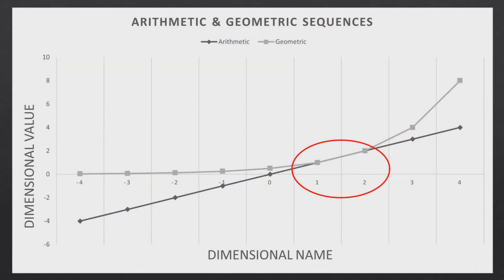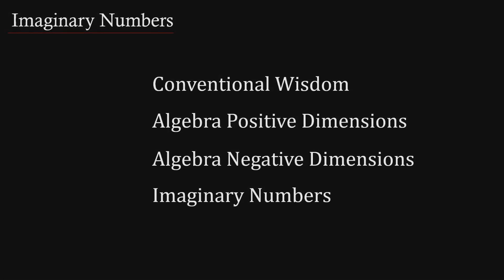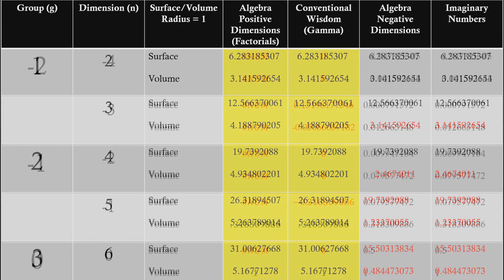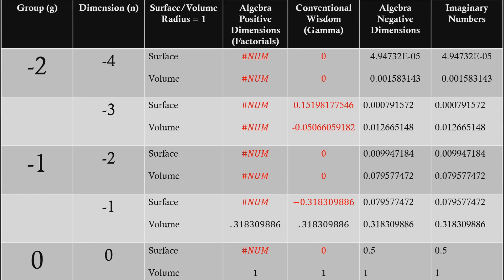In Episode 3, we showed that dimensions 1 and 2 are transitional in nature and that we can use all four methods of calculations for both the surface and the volume of spheres. In positive dimensions, both the conventional wisdom and the algebra for positive dimensions calculations match, where the other two methods do not. In negative dimensions, both the imaginary numbers and the algebra for negative dimensions match, while the other two methods do not.